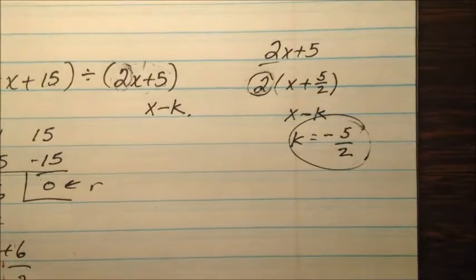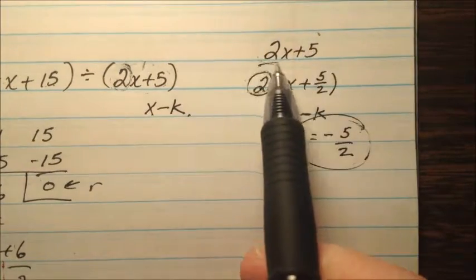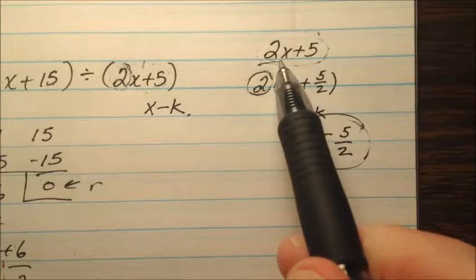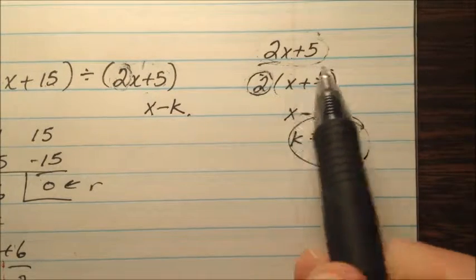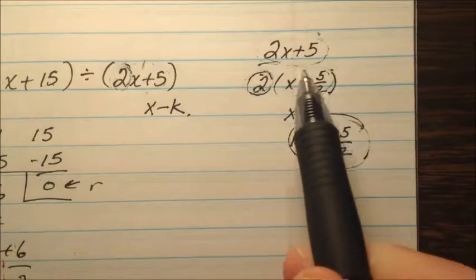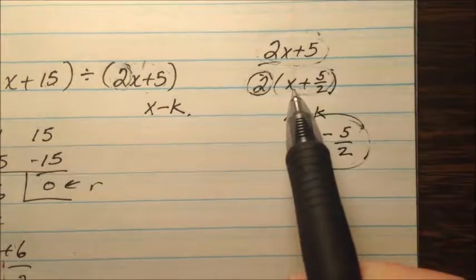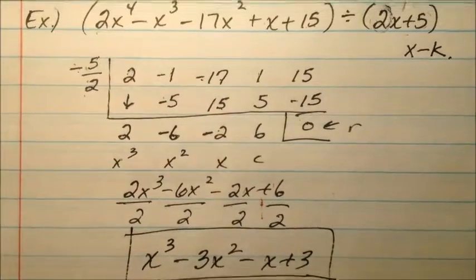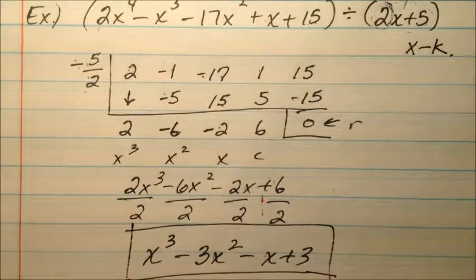So in our example, to be more specific about that, we were going to divide by 2x plus 5. But instead, I broke that 2x plus 5 into 2 and x plus 5 halves. So then I divided first by the x plus 5 halves, then I divided by the 2. So I did a series of divisions and got this for my quotient.